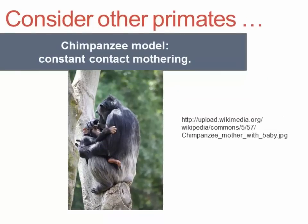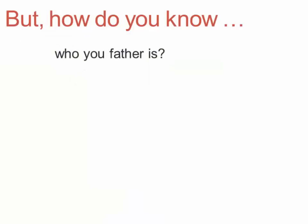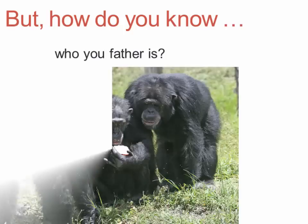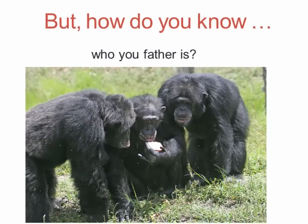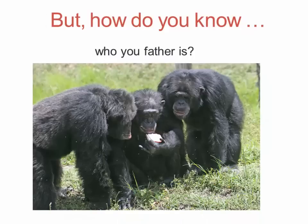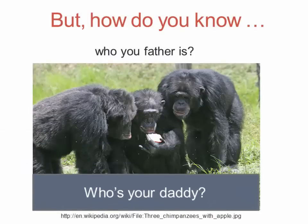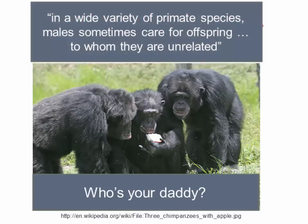That tight bond leads in gorillas and chimpanzees to what's called constant contact mothering, and that's a pretty good way to figure out who your kin are — hang on to them. But in the case of chimpanzees, how do you know who your father is? This proves much more difficult for chimps to discern. Chimps do not appear to know who their father is, so the famous question 'Who's your daddy?' asked of a chimpanzee — they just have to shrug their shoulders.